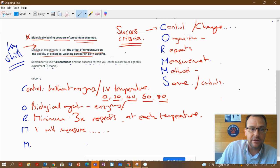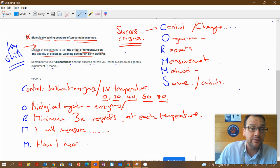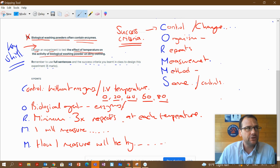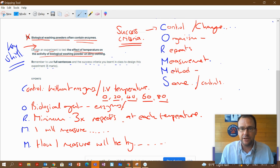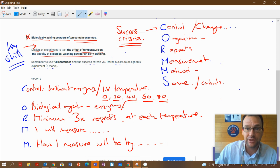The method, how I measure will be by using a stopwatch to time two minutes. I will take out the cloth or compare it to a chart and give it a number between 1 and 10 on cleanliness. Or I will time how long it takes for said cloth to become clean using a stopwatch. That is absolutely fine as well.